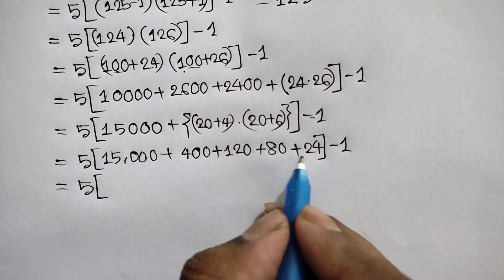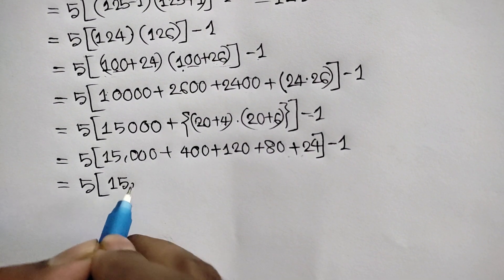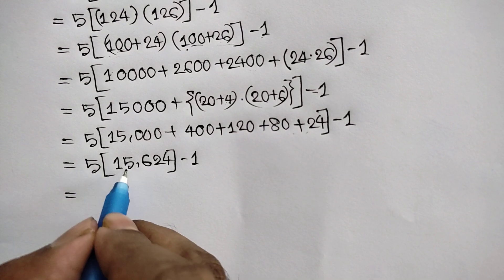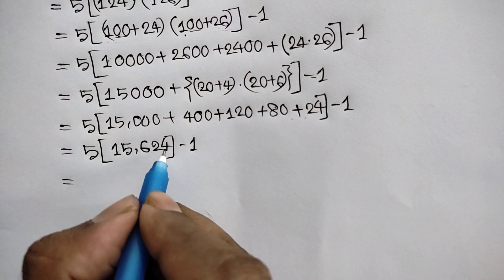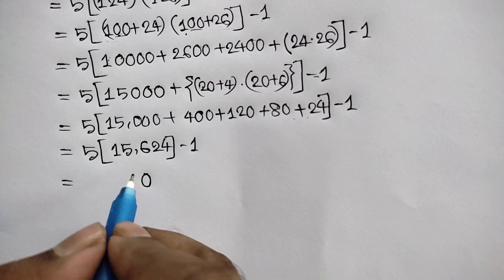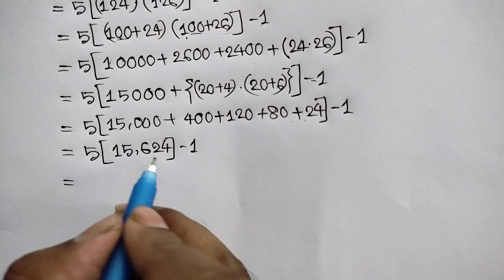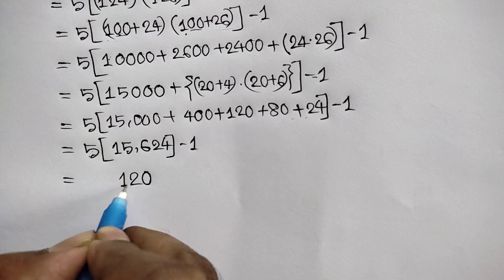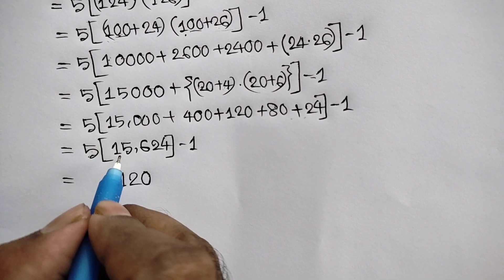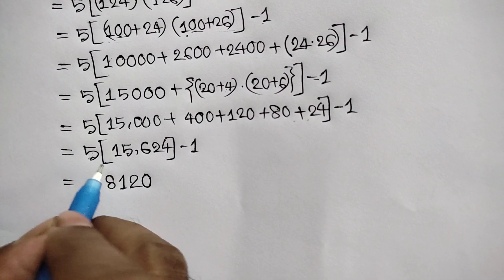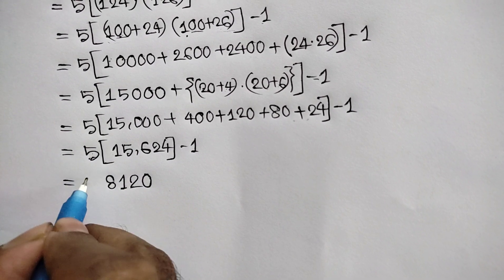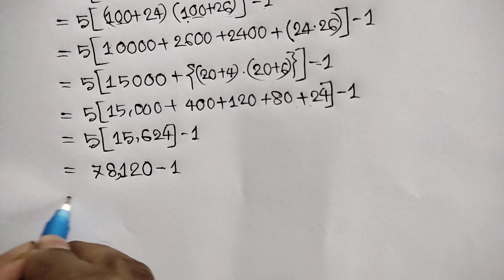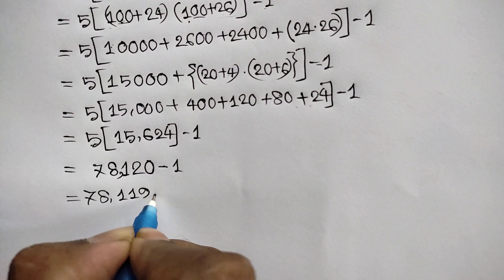Adding these numbers we will get 15624, minus 1 gives 15623. Then 5 times 15624: 5 times 4 is 20, carry 2; 5 times 2 is 10 plus 2 is 12, carry 1; 5 times 6 is 30 plus 1 is 31, carry 3; 5 times 5 is 25 plus 3 is 28, carry 2; 5 times 1 is 5 plus 2 is 7. So we get 78120 minus 1, which equals 78119. That is our final answer.